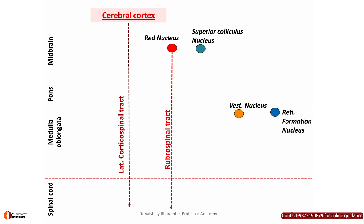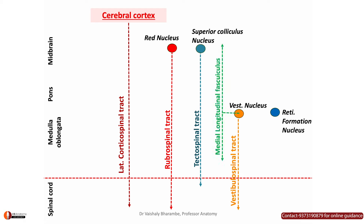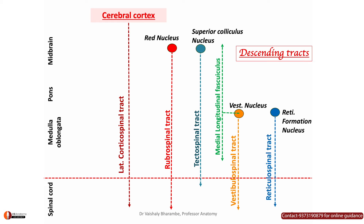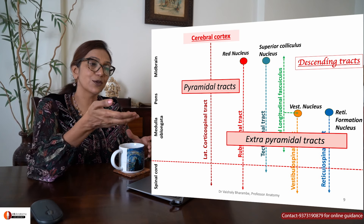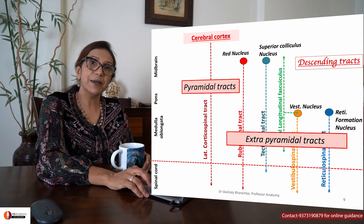From the red nucleus down — rubrospinal tract. From the superior colliculus nucleus down — tectospinal tract. From the vestibular nucleus down — vestibulospinal tract, and also from the vestibular nucleus going up and down limited to the cervical region and brain stem — your medial longitudinal fasciculus. From the reticular formation down — reticulospinal tracts. Those that come directly from the cortex are called pyramidal tracts, and those that come from anywhere but the cerebral cortex are extrapyramidal tracts. From the cortex — pyramidal; from anywhere else in the brain — extrapyramidal. And that's the topic for today.